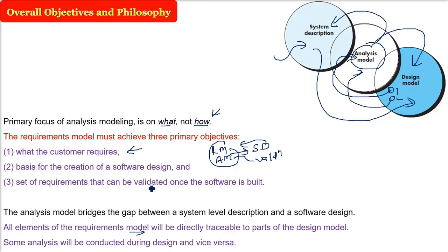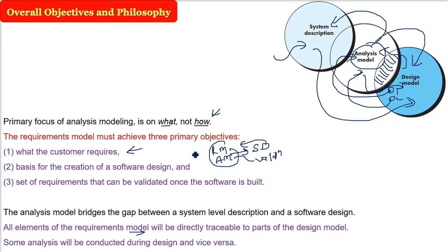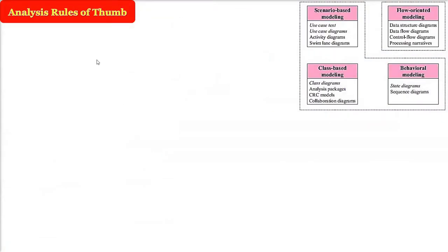This analysis model is the basis of the design model. They have certain things in common — there is some intersection point. Some analysis will be conducted during the design and some design will be conducted during the analysis. Analysis will have some part of the design and design will have some part of the analysis. That is why we say these are quite close things. Design can only come when you have a good analysis model.